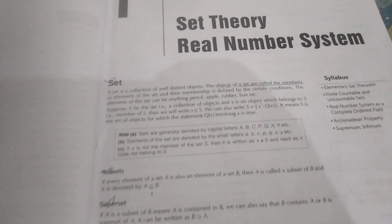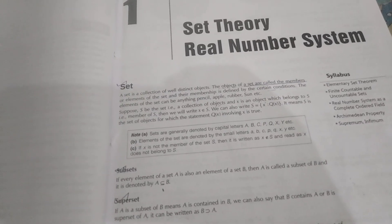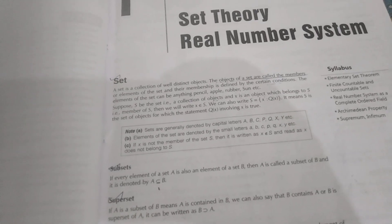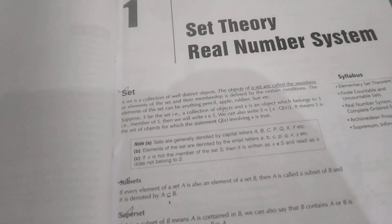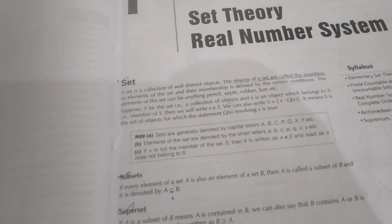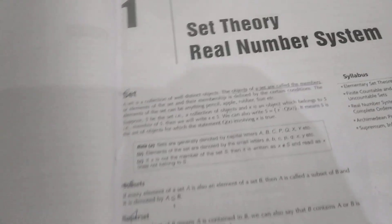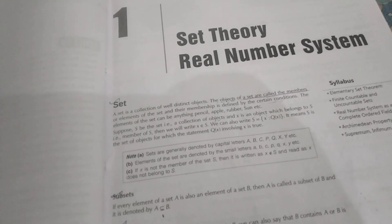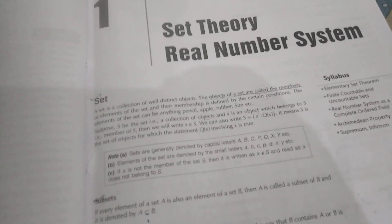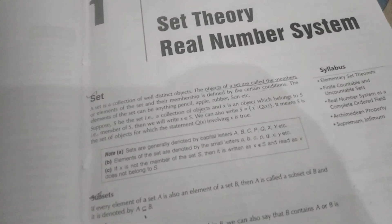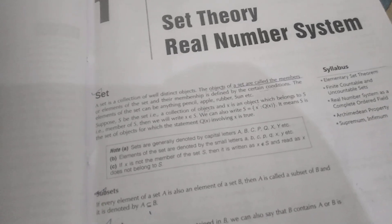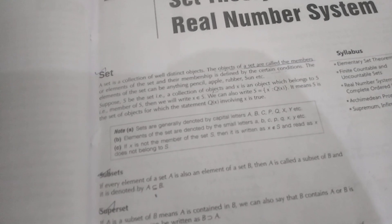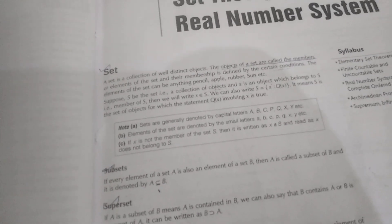The objects of a set we call members or elements. The elements of a set can be anything — for example, books, paper, or pencils. Thank you.